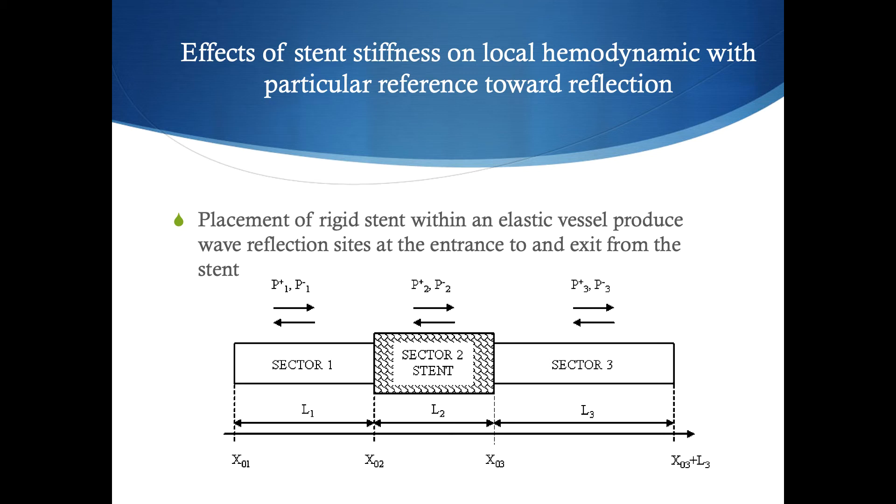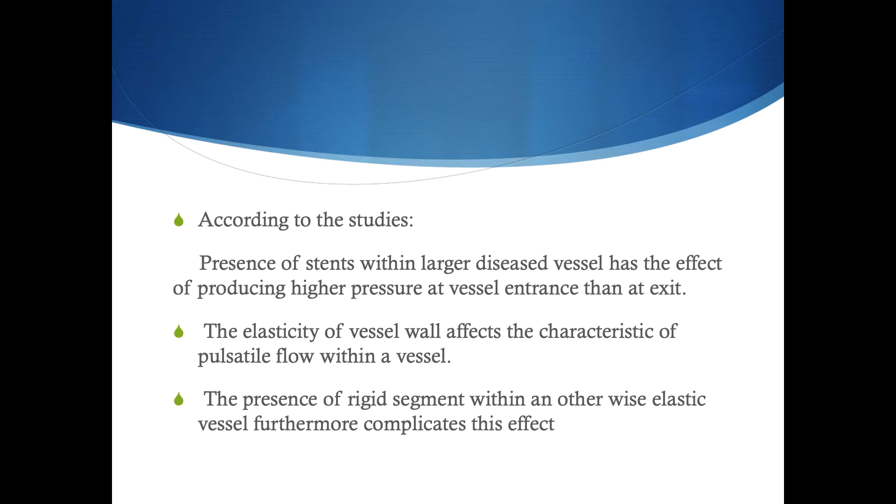In these areas, because of strong variation in blood pressure, turbulent blood flow will result. According to studies, presence of stent within larger diseased vessel affects producing higher pressure at vessel entrance than the exit. The elasticity of the vessel is really important because if the vessel is not elastic enough, it will be rigid and expose enormous amounts of pressure on the stent, resulting in flow rate variations.